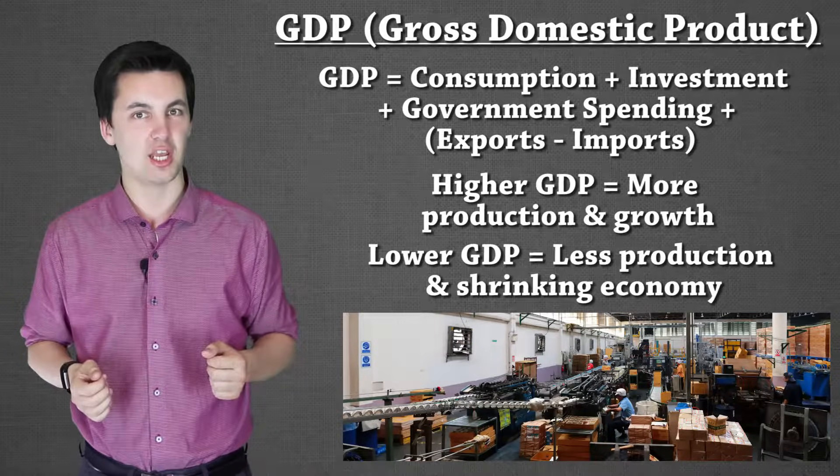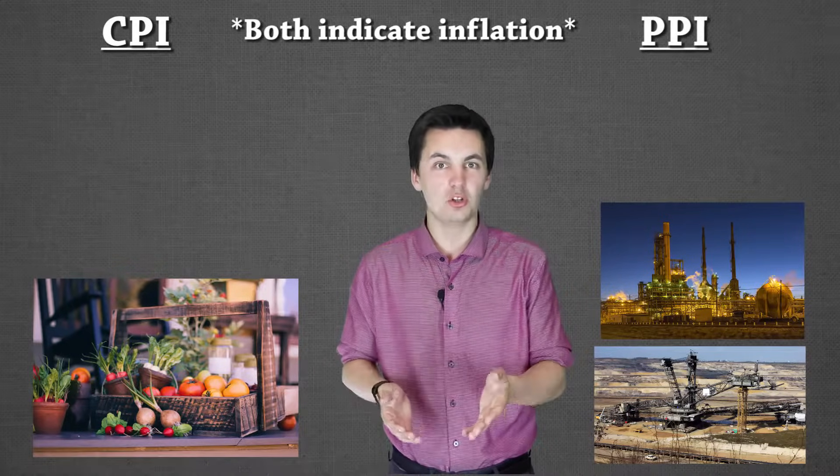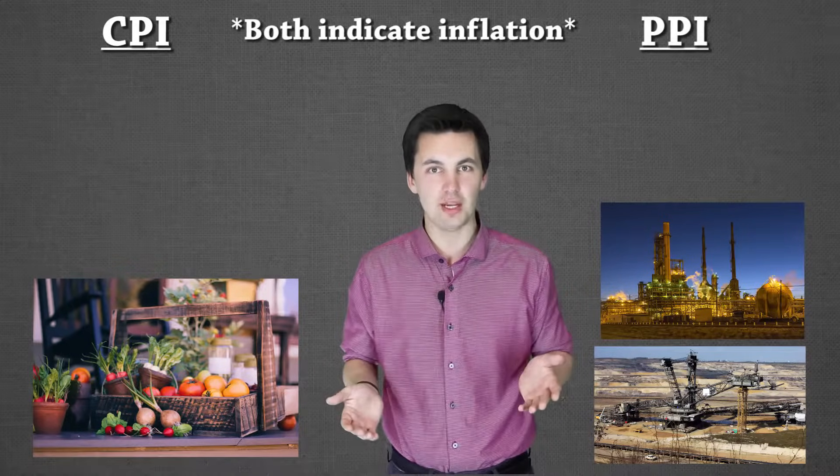Our next economic indicators are the CPI and the PPI. These are really important because they show us what's going on with inflation in the economy, and that is huge, especially if you're investing. If we start to have a lot of inflation, people's money is worth less, spending decreases, goods cost more, and you can't buy as many of them. So we start to see a slowing economy, and that is a red flag.